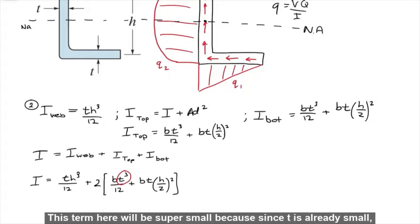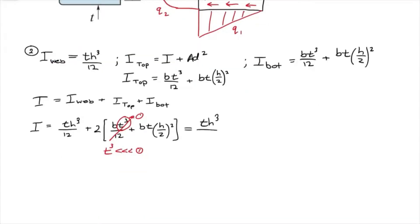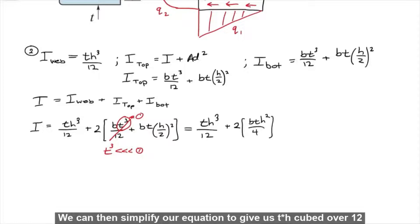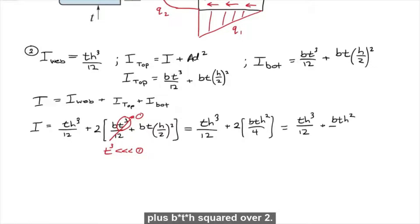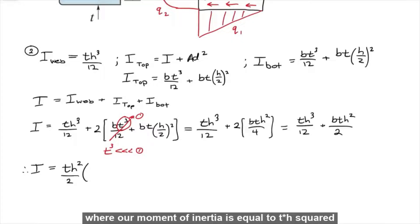This term here will be super small because since T is already small, if we raise it to the power of 3, it will equal to nearly 0. So we can assume T here will equal to 0. We can then simplify our equation to give us TH cubed over 12 plus B times T times H squared over 2. We can then factor out T times H squared over 2 to give us this final equation where our moment of inertia is equal to TH squared over 2 times H over 6 plus B.